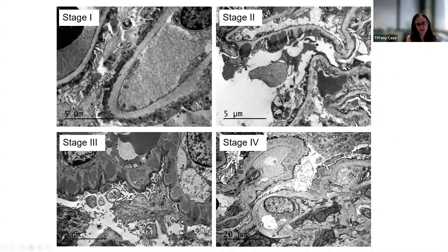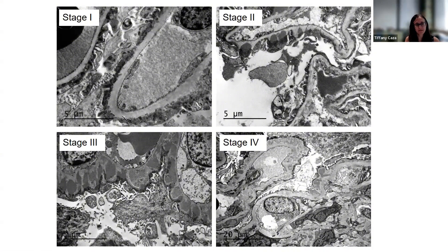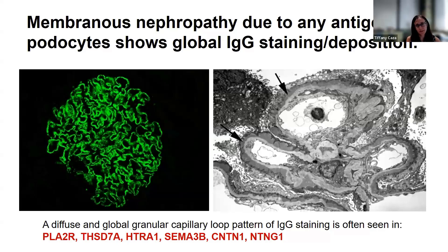In stage three, there are intramembranous immune deposits. In stage four, there will be electron lucencies as well as electron densities. This has prognostic significance: when you have significant intramembranous deposits, even with successful immunosuppressive therapy, the course of proteinuria will be protracted, as it takes time for these immune complexes to resolve and remodel the glomerular basement membranes back to normal or near normal.